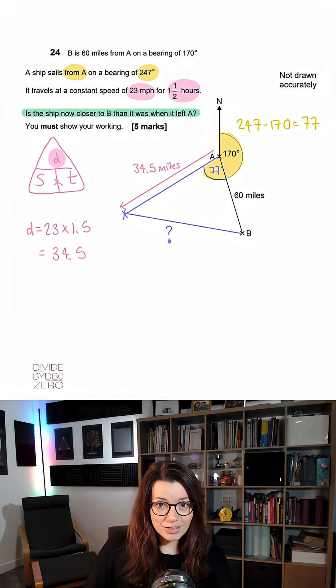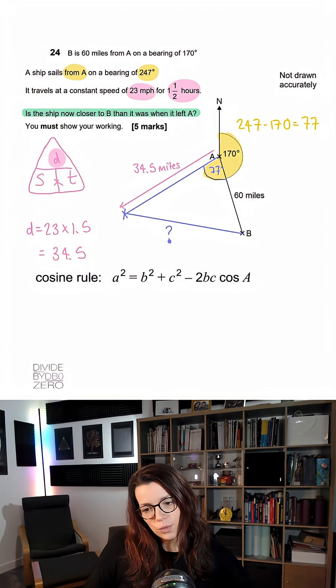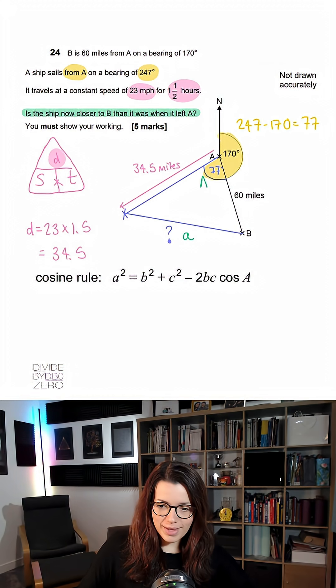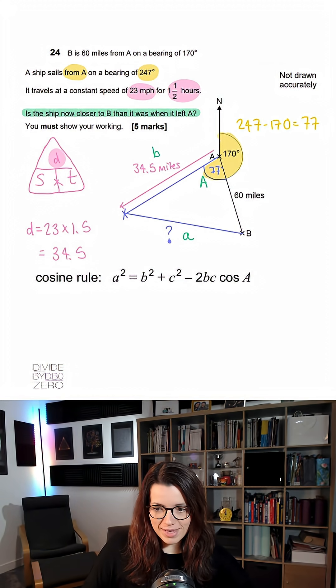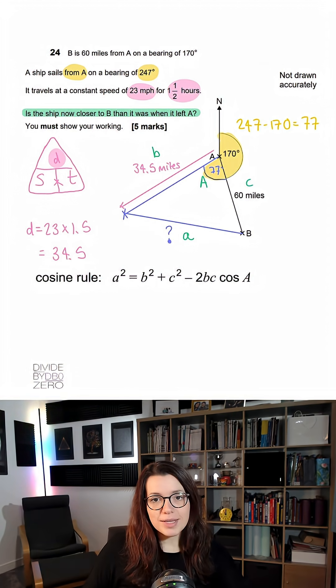And now because I want to know the question mark side, I'm actually going to use the cosine rule. I can call this small a, and the angle that I know here big A. I can call this B and this C, and then this is a perfect use case for the cosine rule. Because there's one angle involved and I want to know the opposite side.